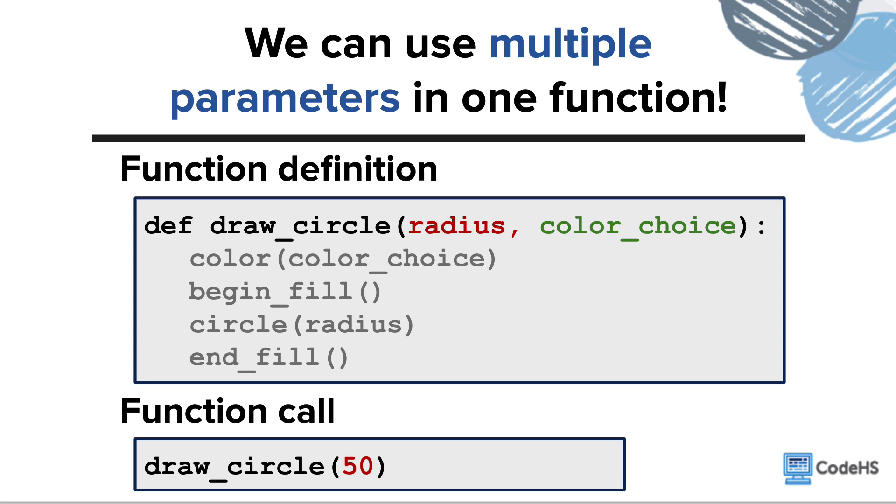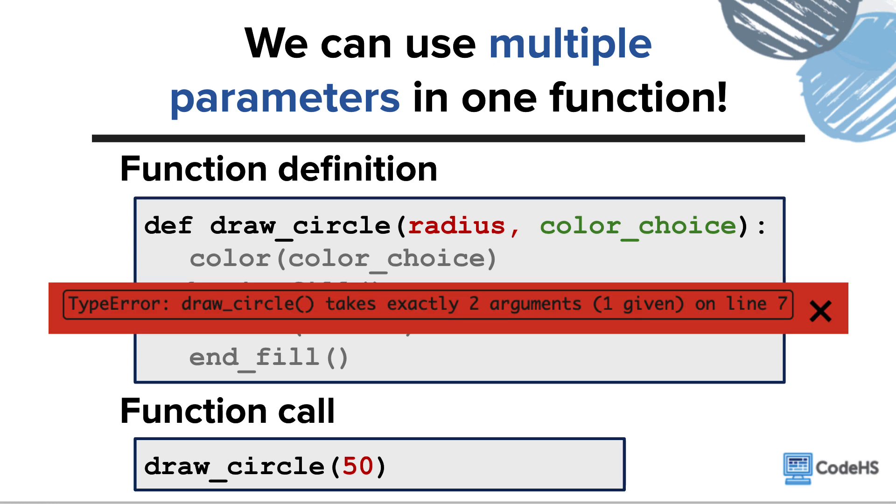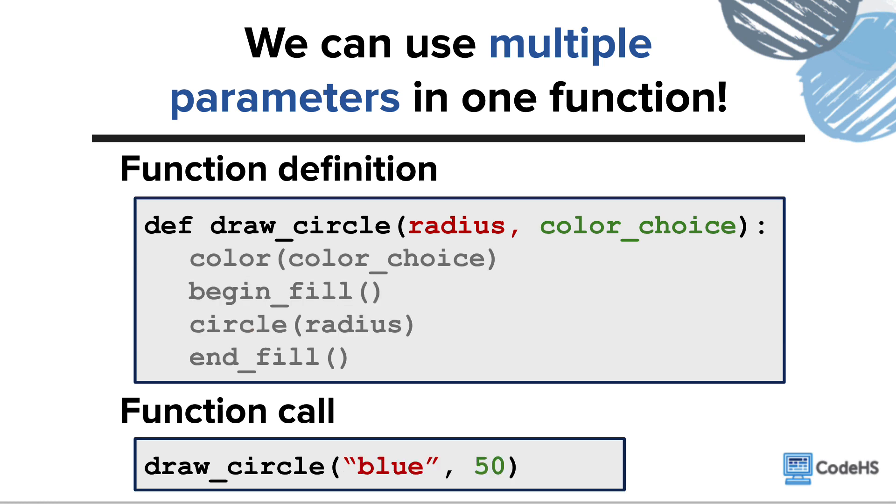If we tried to call the function and just entered a number for the radius, we would get an error telling us that there are two arguments required and we have only given one. If there are two parameters in the function definition, we need to make sure we give two arguments to the function. Here, we are giving the two required arguments, but we still have a program that doesn't work. This is because we are giving the color name blue for the radius and the number 50 for the color. We need to make sure our arguments are given in the correct order.